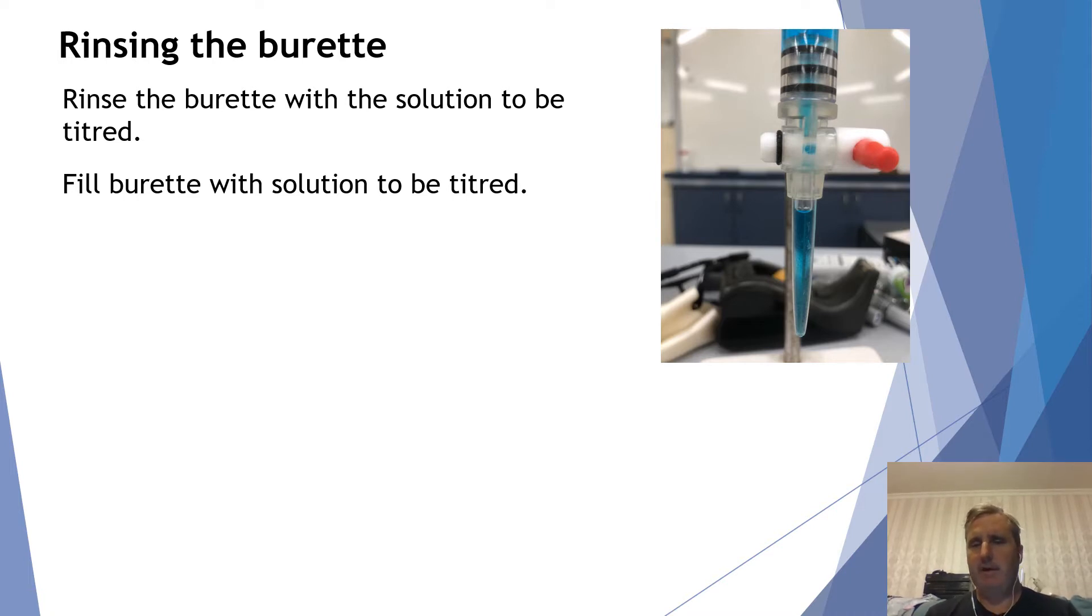Now one thing we need to notice is that if we look at this point here in the bottom of our burette, we can see that there's actually a bubble sitting here. Now this is quite important that we get rid of this bubble at the start of our titration because it could randomly come out at any time and cause us to have an incorrect volume in any one of our titers.